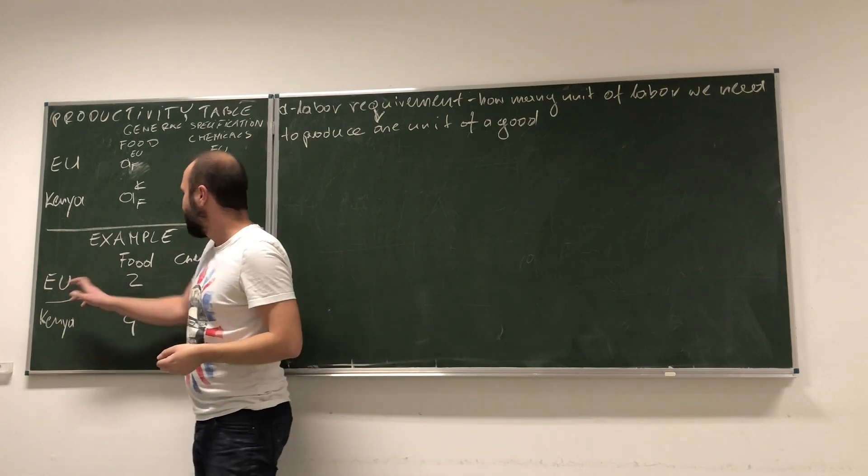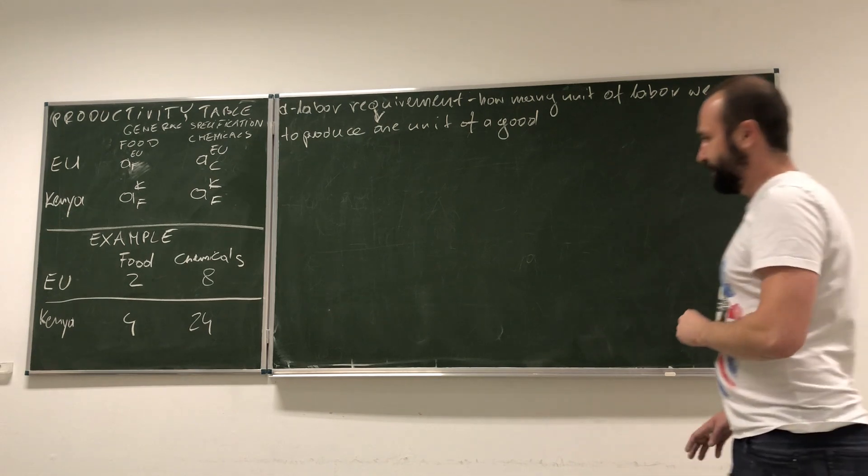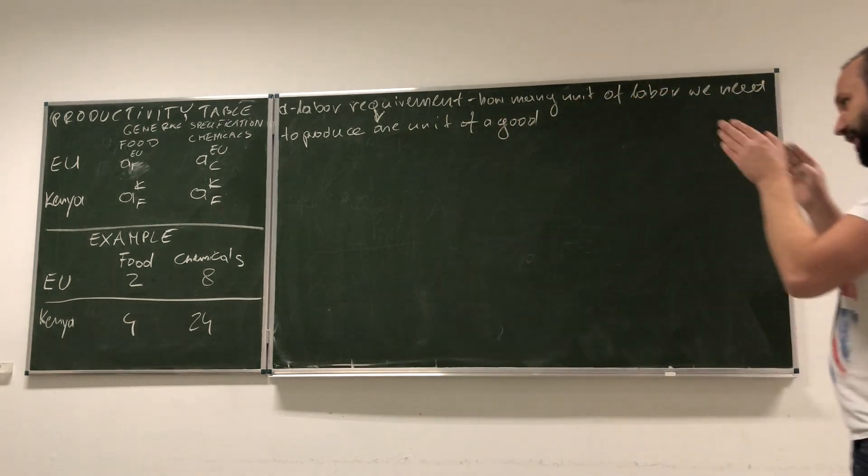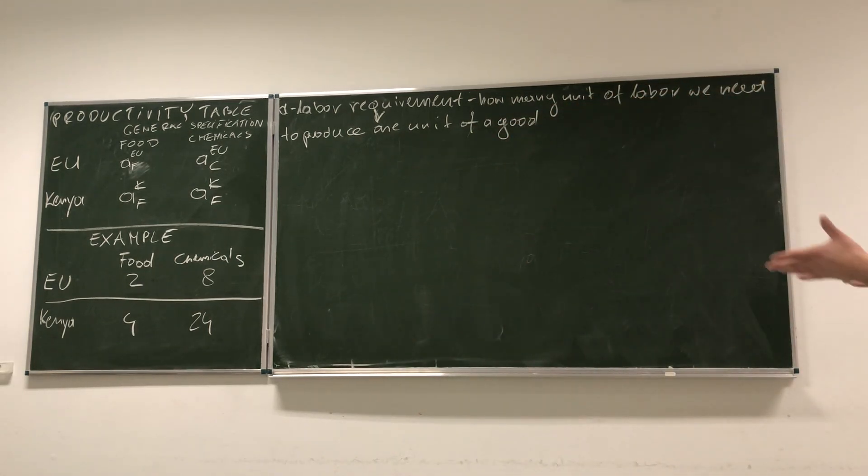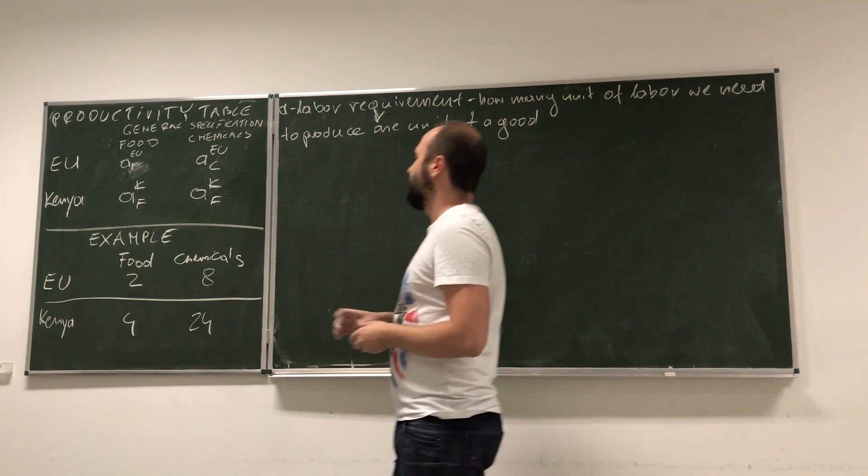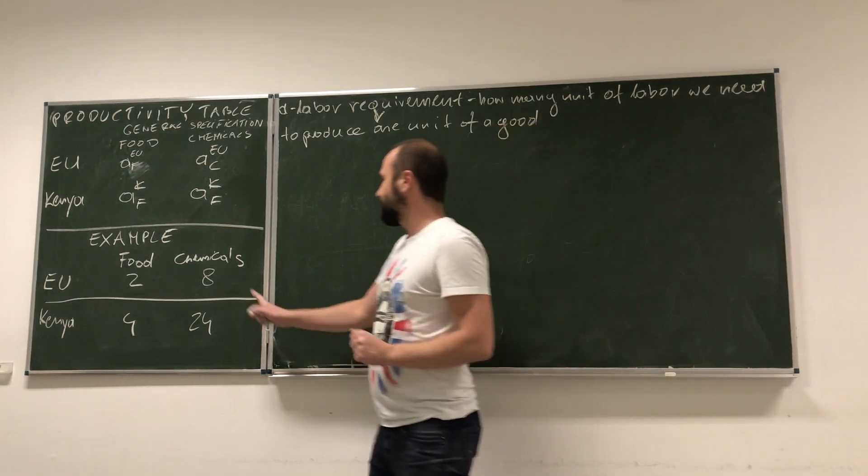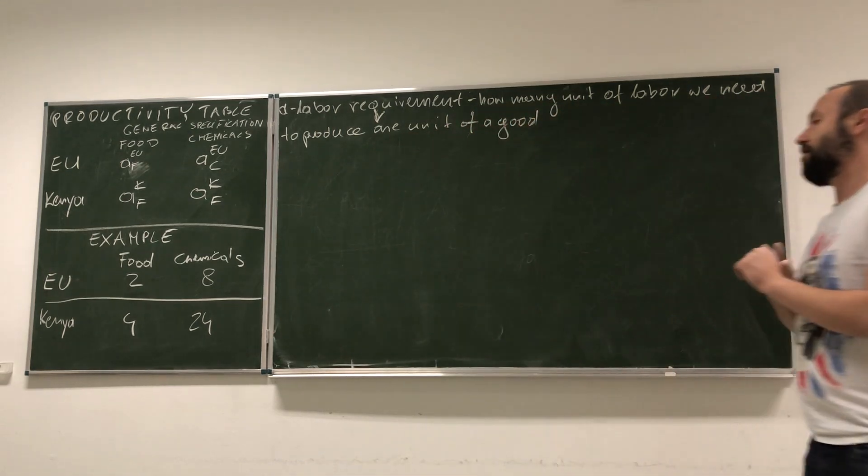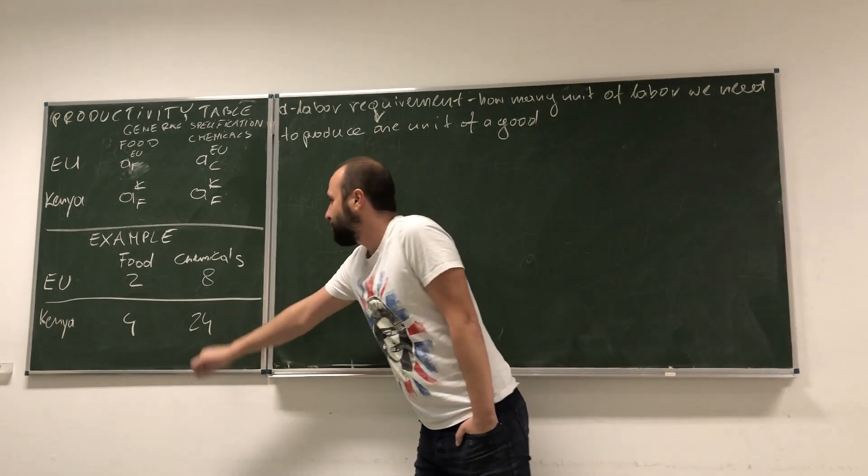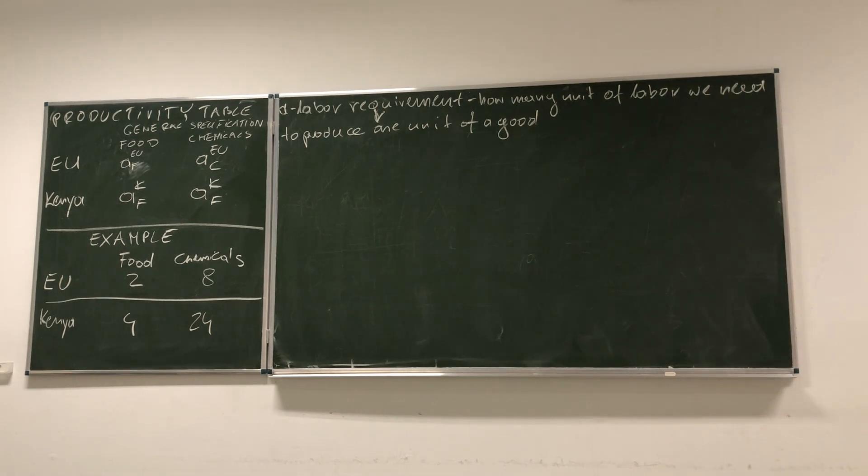Okay, and now look at the numbers that we've got in the table. In that table, we've got that in European Union, in order to produce food, we need two units of labor, while in Kenya we need four. Which means that EU is better in producing this good than Kenya. And now, chemicals, the production of one unit of chemicals in EU requires eight units of labor. What is better? Well, in Kenya, 24. So, look, again we see that EU is better at producing chemicals than Kenya.